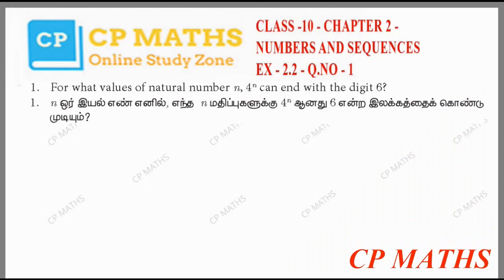Hello guys, we are going to talk about this in Chapter 2 in Numbers and Sequence. What is the question? For what values of the natural number n can 4^n end with digit 6?